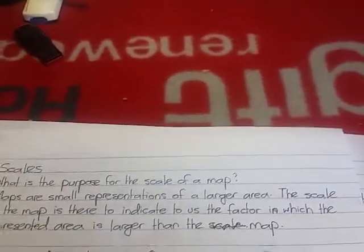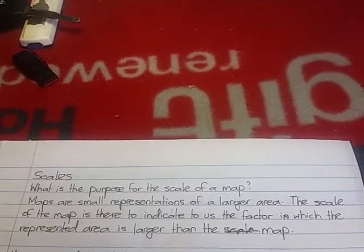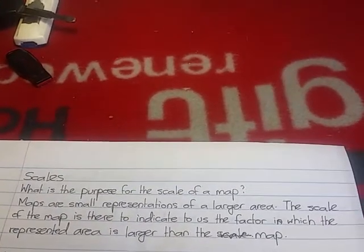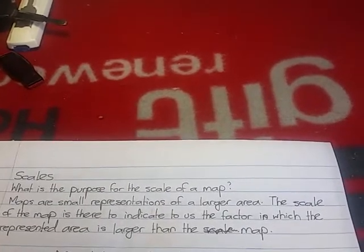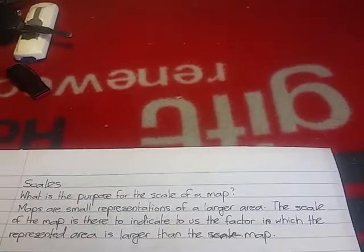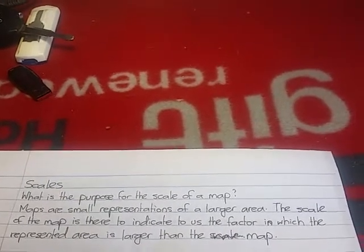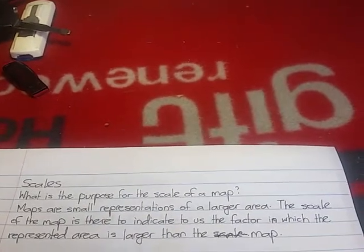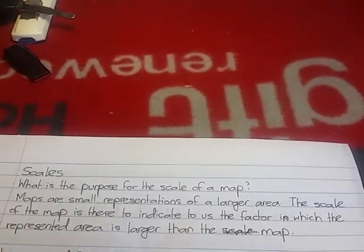So firstly, what is the purpose of the scale of a map? Maps are small representations of a larger area. The scale of a map is there to indicate to us the factor in which the represented area is larger than the map. For instance, let's say someone decided to make a map of Durban or whatever country or place that you come from. They made a quite small map and said a scale factor times 1,000. So that means the map is 1,000 times smaller than what the actual place is meant to be — Durban would be 1,000 times bigger than what the map shows.